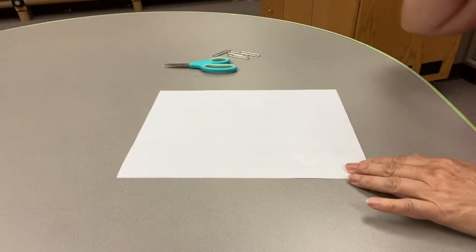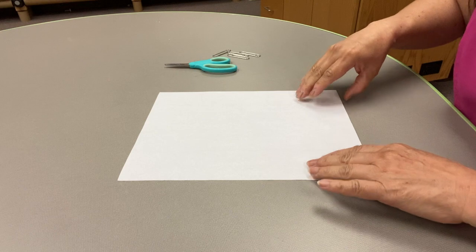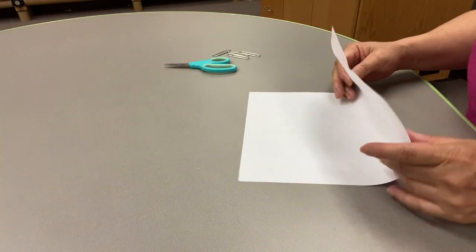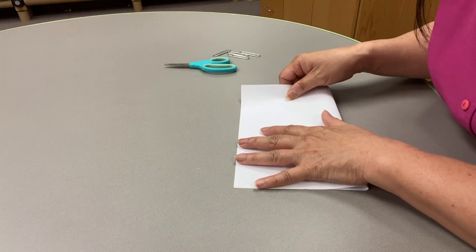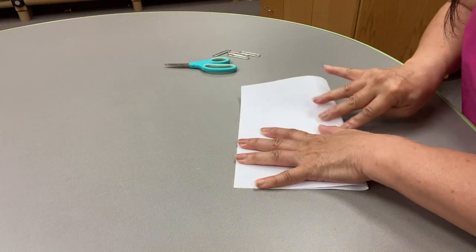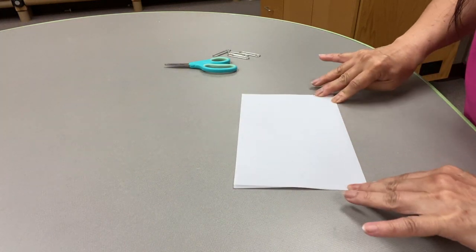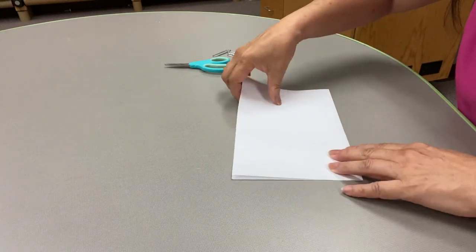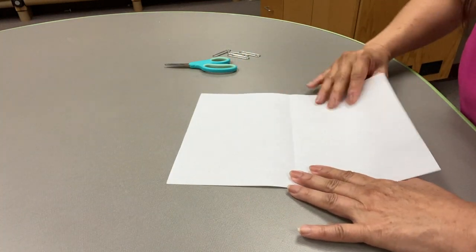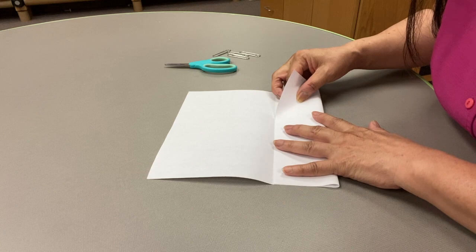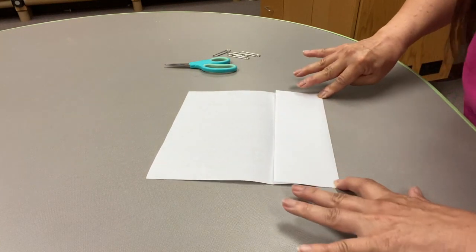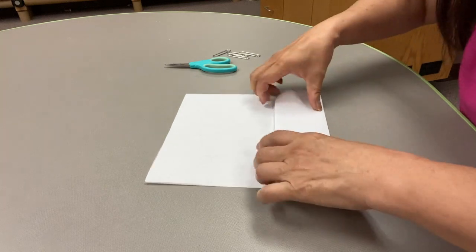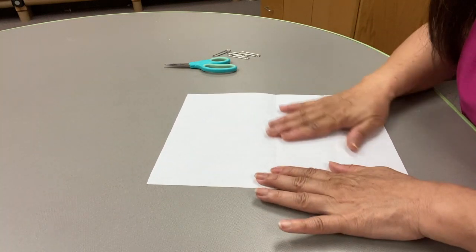So let's make our twirlybird. One sheet of paper can make four twirlybirds. First, take your paper and fold it in half. And then open it up and fold one side in half again, so it'll be in quarters. Like so.